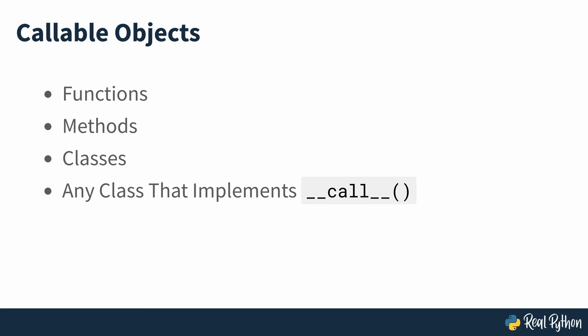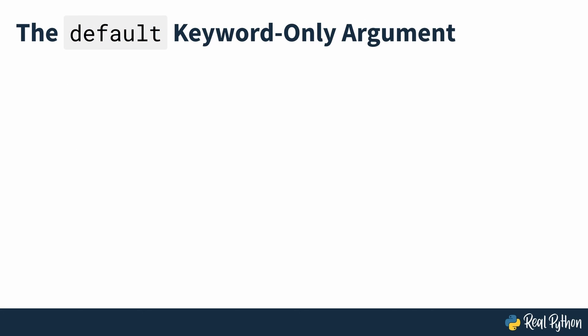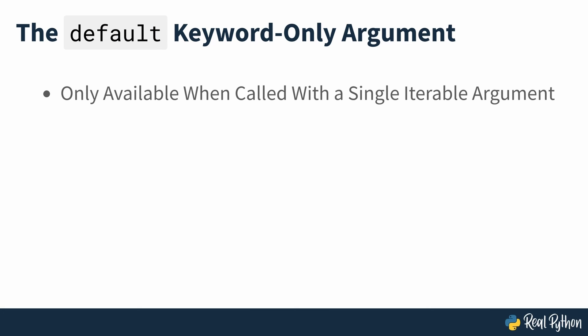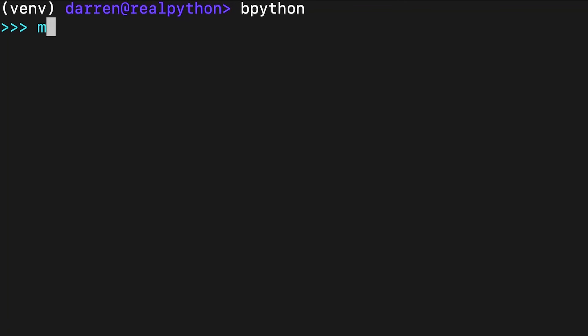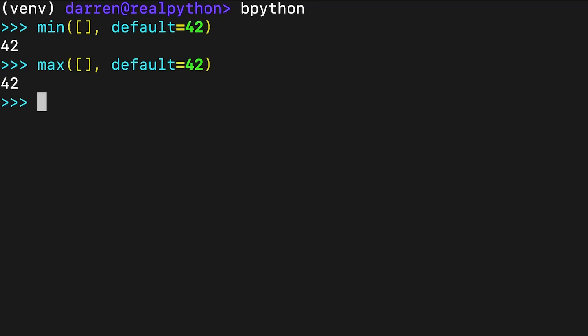Note that you don't need to call int — you just pass int without the parentheses because key expects a function object, or more accurately, a callable object. Callable objects in Python include functions, methods, classes, and instances of any class that provides a dunder call special method. The second keyword-only argument that allows you to customize the standard behavior is default, which is only available when you call the function with a single iterable as an argument. The job of default is to provide a suitable default value as the return value of min or max when called with an empty iterable, rather than raising a value error.